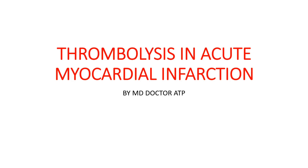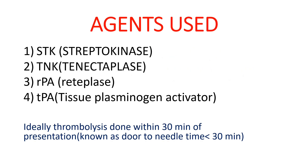In today's video we are going to discuss how to do thrombolysis in acute MI — acute myocardial infarction. The agents used for thrombolysis are: streptokinase (STK), tenecteplase, reteplase, and tissue plasminogen activator (tPA).